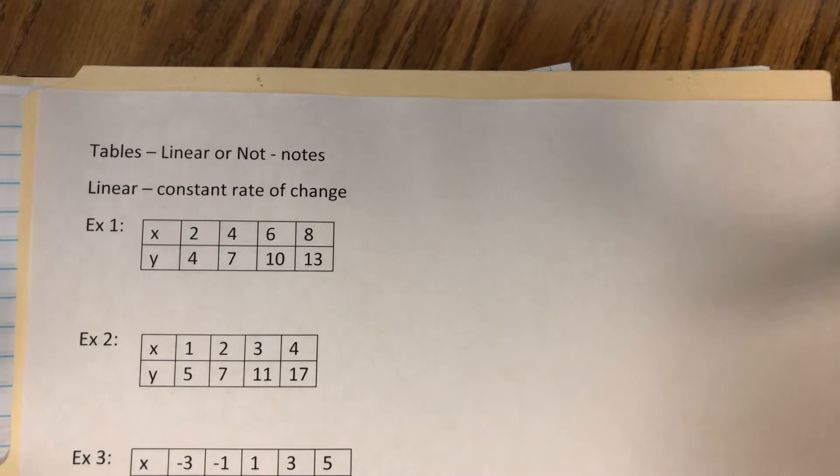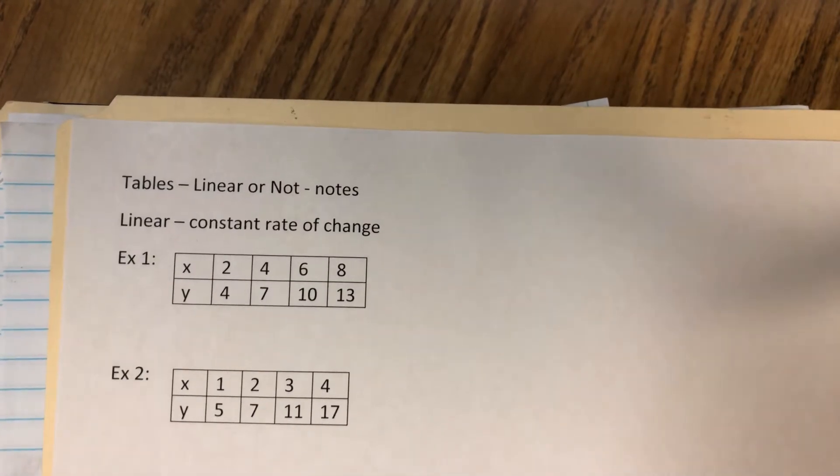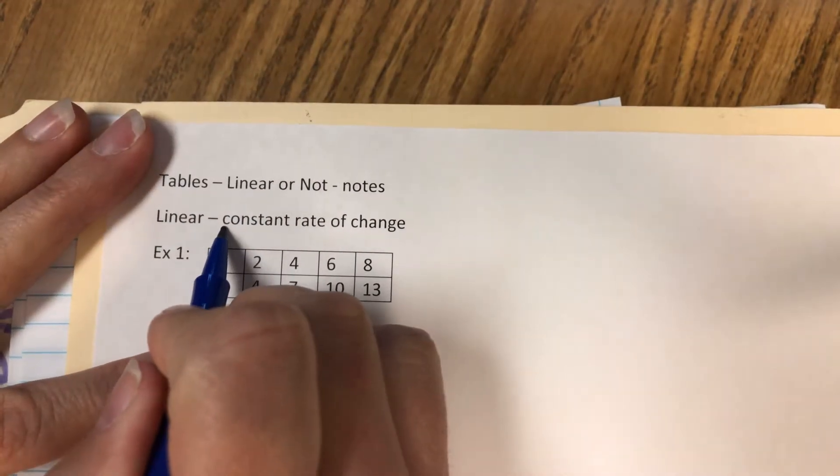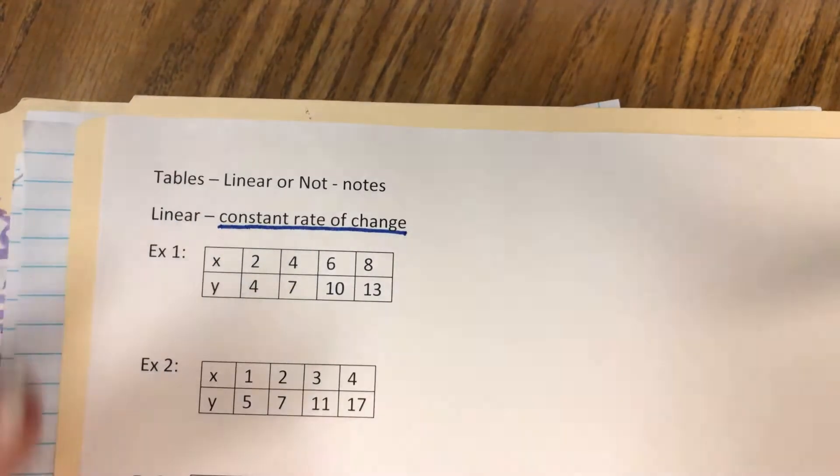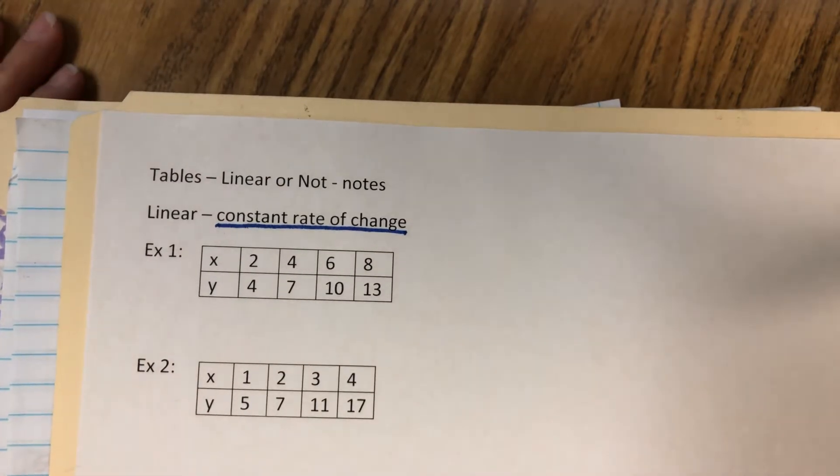Today's video is about linear or not. We're going to be looking at some tables and deciding if they're linear or not. To be linear, there has to be a constant rate of change between both the x and the y.